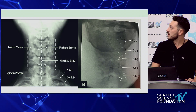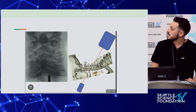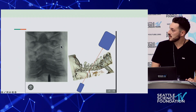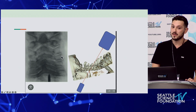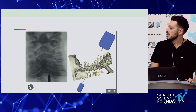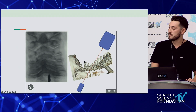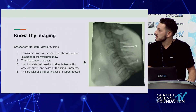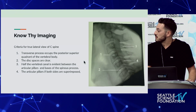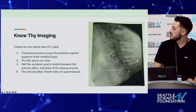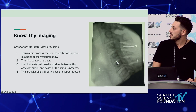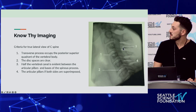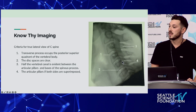Your AP view is where you're going to start - you're going to oblique over and start driving your needles. If you can find the dens and C1-2, you know where you are. Tilting your C-arm can accentuate the lateral masses if you're trying to go for more parallel placement of your electrode to get over your nerves. Your criteria for a true lateral of the C-spine: the transverse process occupies the posterior superior quadrant of the vertebral body, disc spaces are clear, half of the vertebral canal is evident between the articular pillars and the base of the spinous process, and the articular pillars of both sides are superimposed.